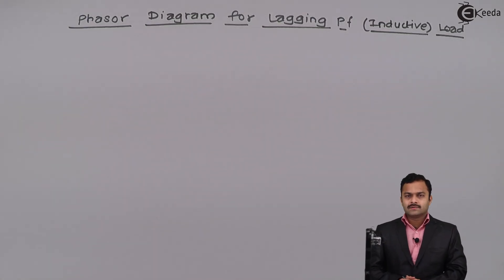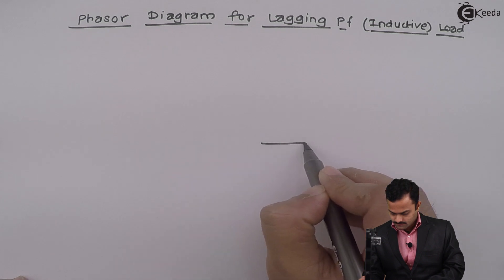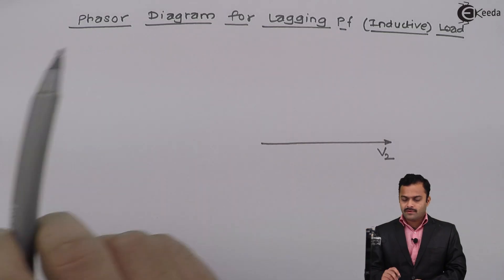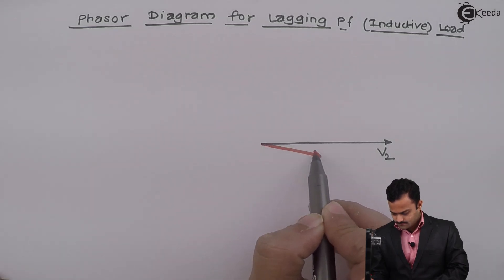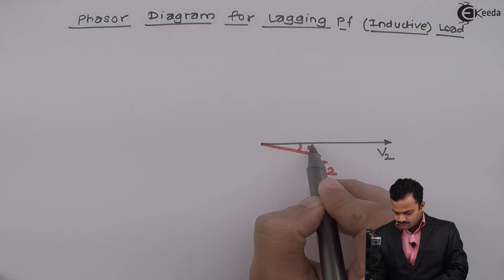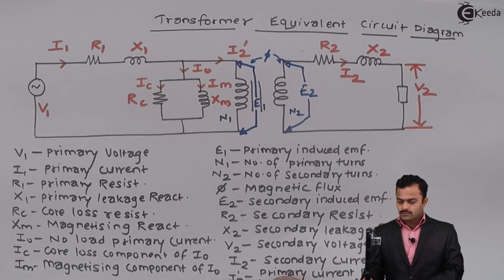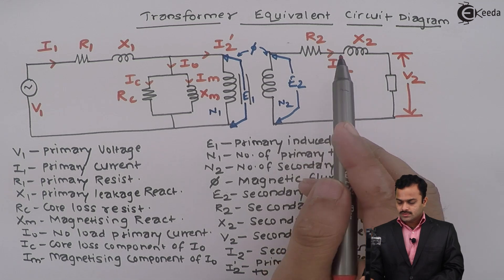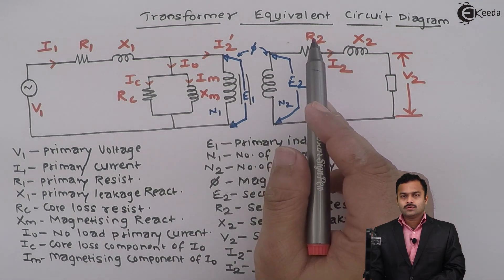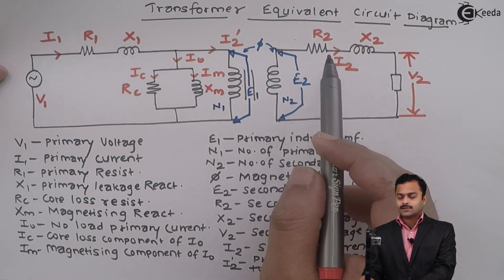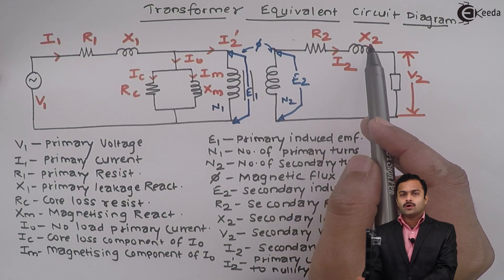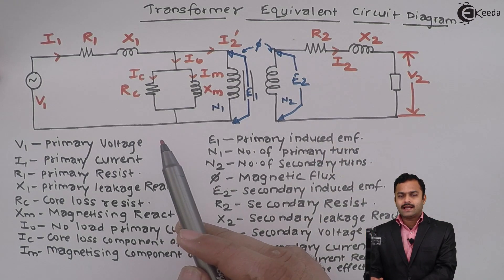I will start with the terminal voltage V2, taking V2 as a reference. For a lagging power factor load, the current I2 taken by the load lags voltage V2 by angle phi2. This angle is phi2. I2 flows through R2 and X2, giving voltage drops I2·R2 across R2 and I2·X2 across X2. Since R2 is a pure resistance, I2·R2 is in phase with I2. The voltage I2·X2 leads current I2 by 90 degrees.